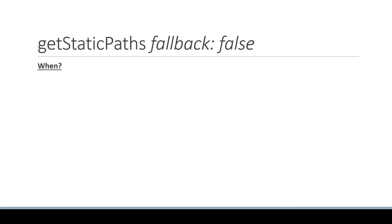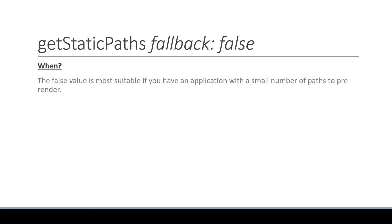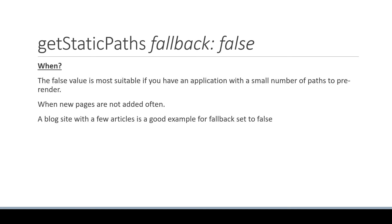When would you use fallback set to false? The false value is most suitable if you have an application with a small number of paths to pre-render and new pages are not added often. A blog site with a few articles is a good example for fallback set to false. Each blog post would be statically generated at build time, which helps with faster load times and SEO.